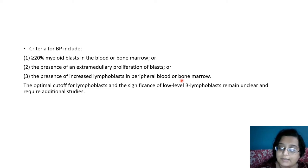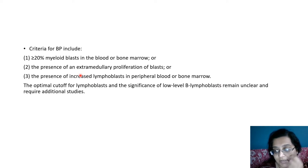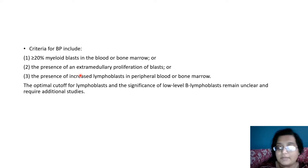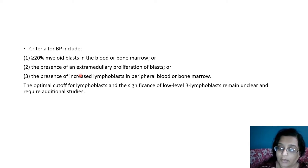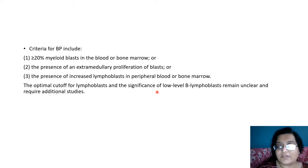Blast crisis is not limited to myeloid blasts — in WHO classification, 70-80% is myeloid and 20% is lymphoid blast. Presence of increased lymphoblasts in peripheral blood is now a relevant criterion for blast phase. Even if lymphoblasts are less than 20%, if there are no blasts in marrow/smear but a collection of blasts exists in skin, eye, or elsewhere, that also classifies as blast phase. The optimal cutoff for lymphoblasts remains unclear and requires additional study.